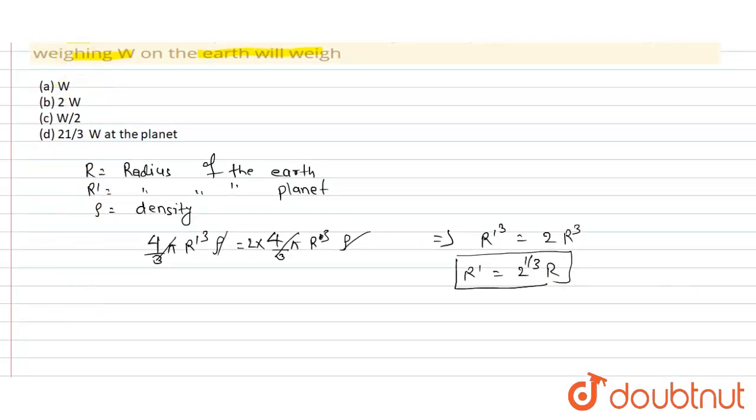In this question it is also given that the acceleration due to gravity on the planet, let it be g', is equal to 2Gm divided by R² for the planet.